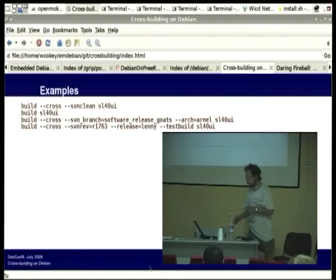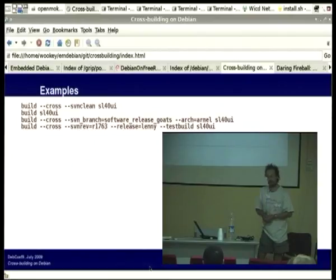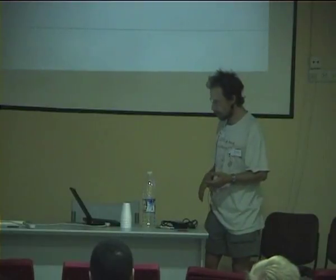If you just say 'build SL40UI', you get a native ARM build. If you want to build an old version you specify an SVN branch. You can specify a target architecture since the default is still ARM, which is about to change to ARMEL at some point. The script defaults as many things as it can — it knows that if you're building for ARM from development, you should be doing it in a Lenny chroot. If you want to actually build in a Lenny chroot, you can just say 'release=lenny' and it'll build there.